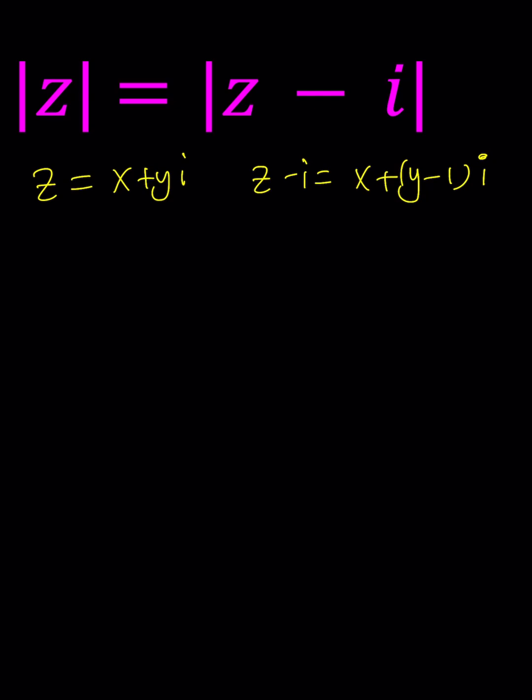And then we want to take the absolute values, so we're going to get the square root of X squared plus Y squared. And on the right hand side, we're going to get X squared along with some other terms, which is Y minus 1 squared, right?